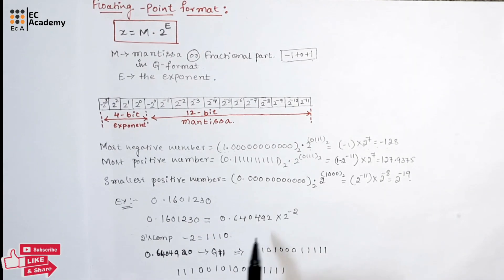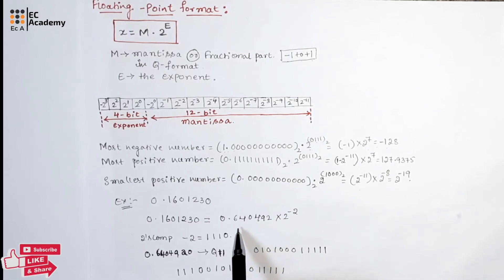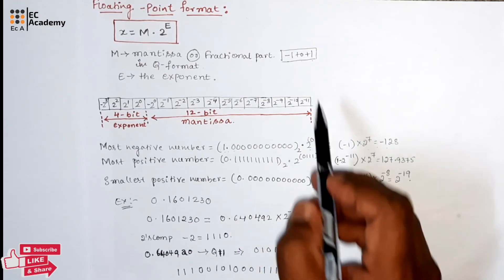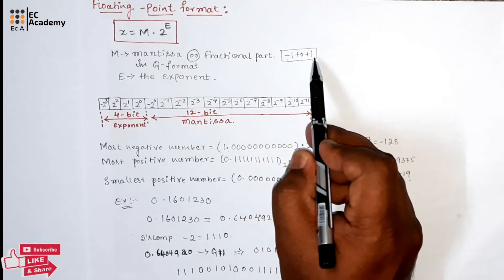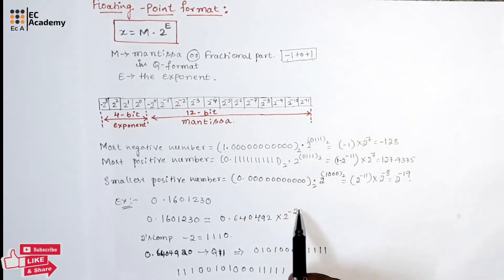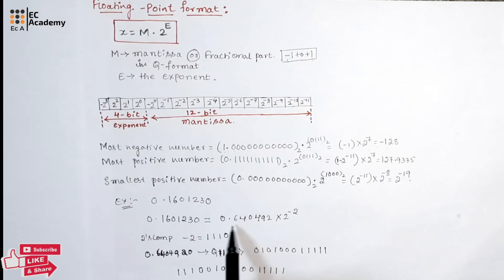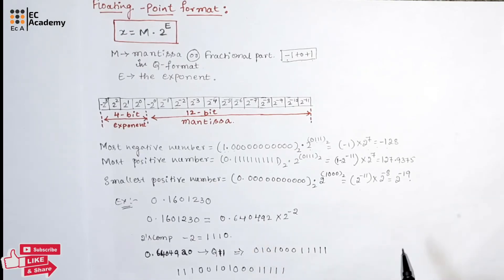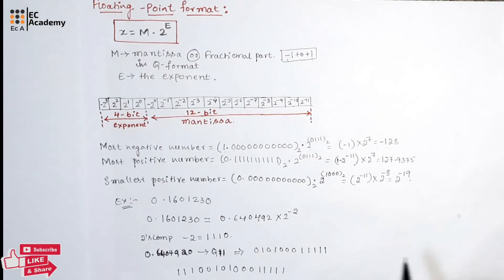The question is: can we take the same mantissa value itself? No. You can take any value between minus 1 to plus 1, and the exponent value will change accordingly if you change this value. This is about floating point format. Hope you have understood the topic. Thank you.